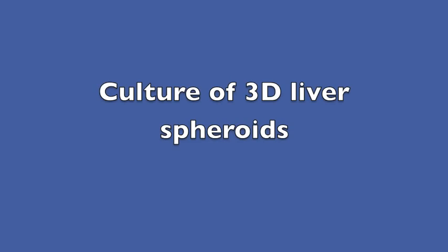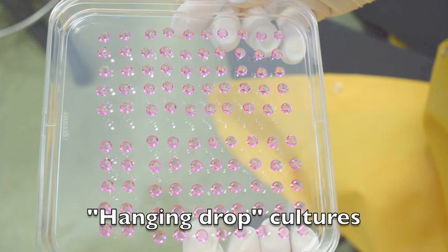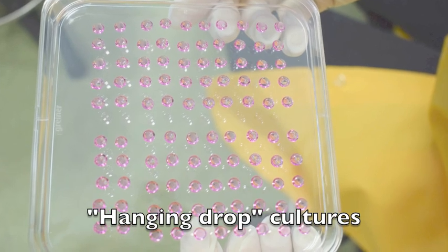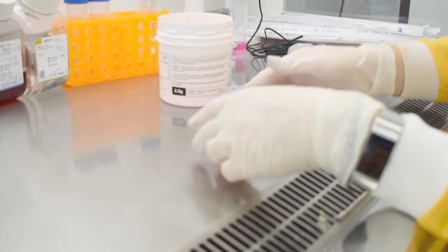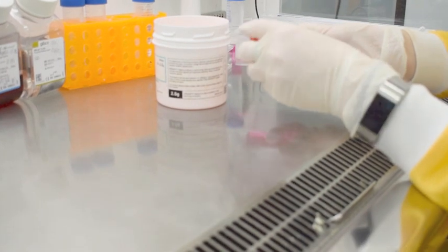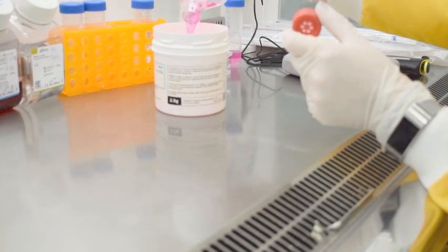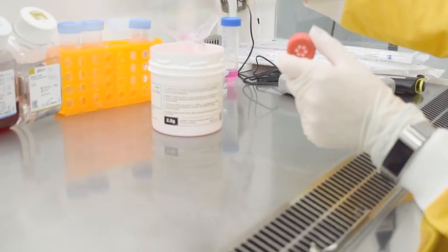Culture of 3D liver spheroids. Day 1 spheroid plate set up. Medium is poured off the monolayer of hepatocytes.